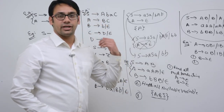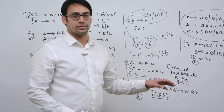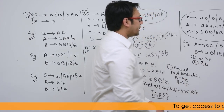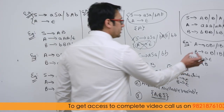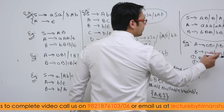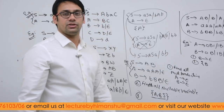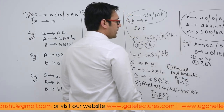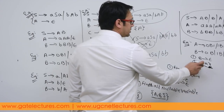Check if any right-hand side is made up of only nullable variables. We have 0 and 1 in the productions, so none of them are made up of only B. Therefore B is the only nullable variable.